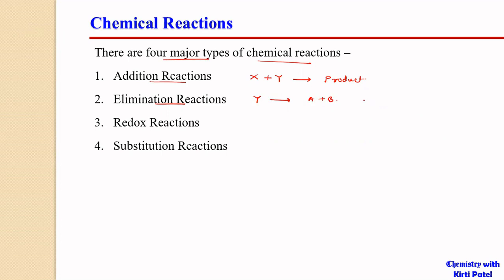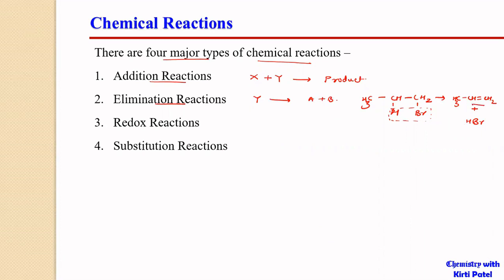For example, CH3CH2CH2Br can eliminate one hydrogen and one bromine to give us CH3-CH=CH2 plus HBr. The HBr molecule is eliminated out of the reacting molecule. Such reactions are called elimination reactions, which generally occur via formation of multiple bonds.